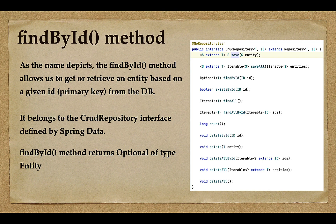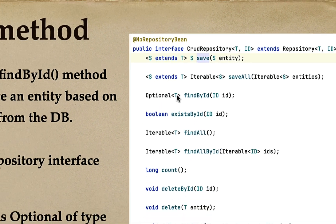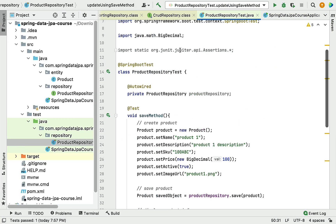Welcome back. In this lecture we'll see how to retrieve an entity from the database table using the findById method. The findById method is from the CrudRepository interface, and it returns an Optional type entity. As the name suggests, findById allows us to get or retrieve an entity based on a given id from the database table. Let's head over to the IDE and see how to do this.